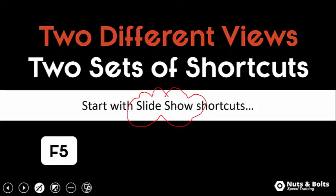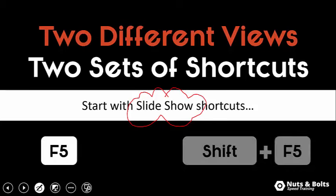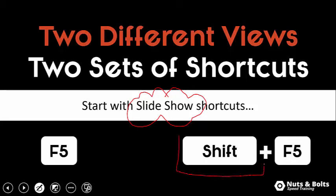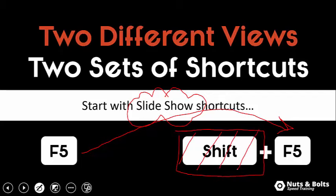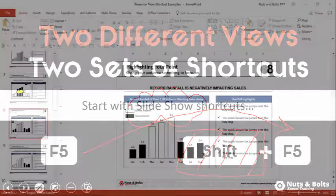Your slideshow shortcuts are F5 and Shift+F5. Quick heads up: using the Shift key is one of the fastest ways to double up on your keyboard shortcuts. F5 stays the same, you add the Shift key, and boom — you double the number of shortcuts you know. Let me flip over to PowerPoint and show you how this works.